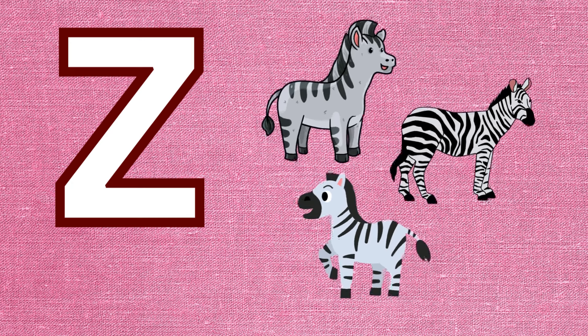U is for umbrella, u-u-umbrella. V is for violin, v-v-violin. W is for watch, w-w-watch. X is for xylophone, x-x-xylophone.